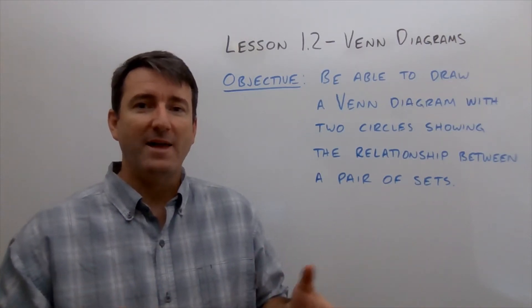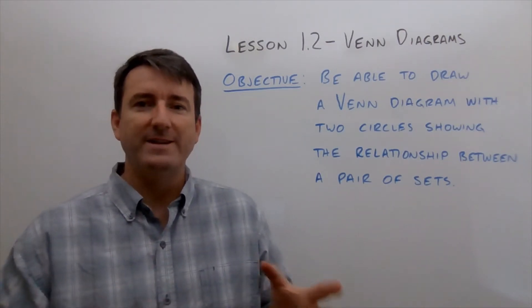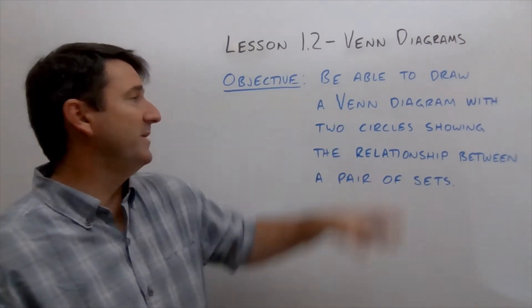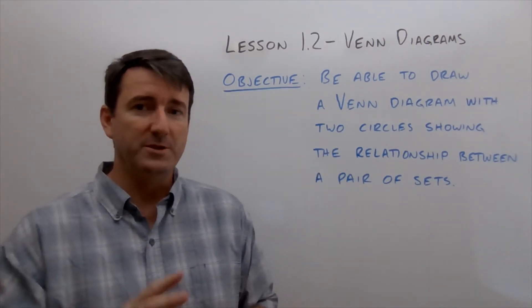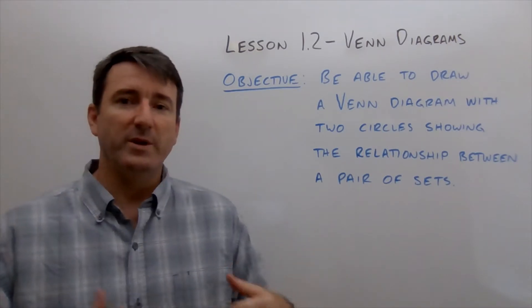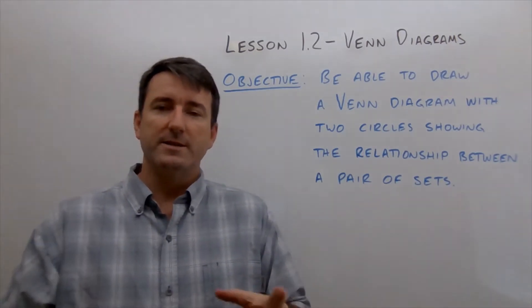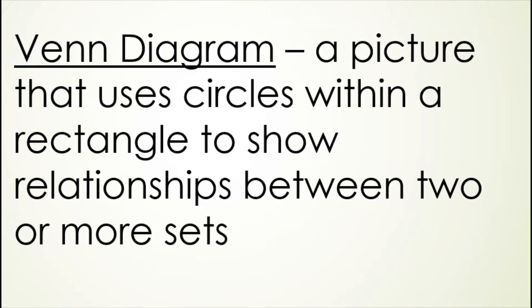This is College Math Lesson 1.2 Venn Diagrams. Our objective in this lesson is to be able to draw a Venn diagram with two circles showing the relationship between a pair of sets. A Venn diagram is a picture that uses circles within a rectangle to show relationships between two or more sets. We start by drawing a rectangle and then draw circles inside that rectangle that represent different sets.